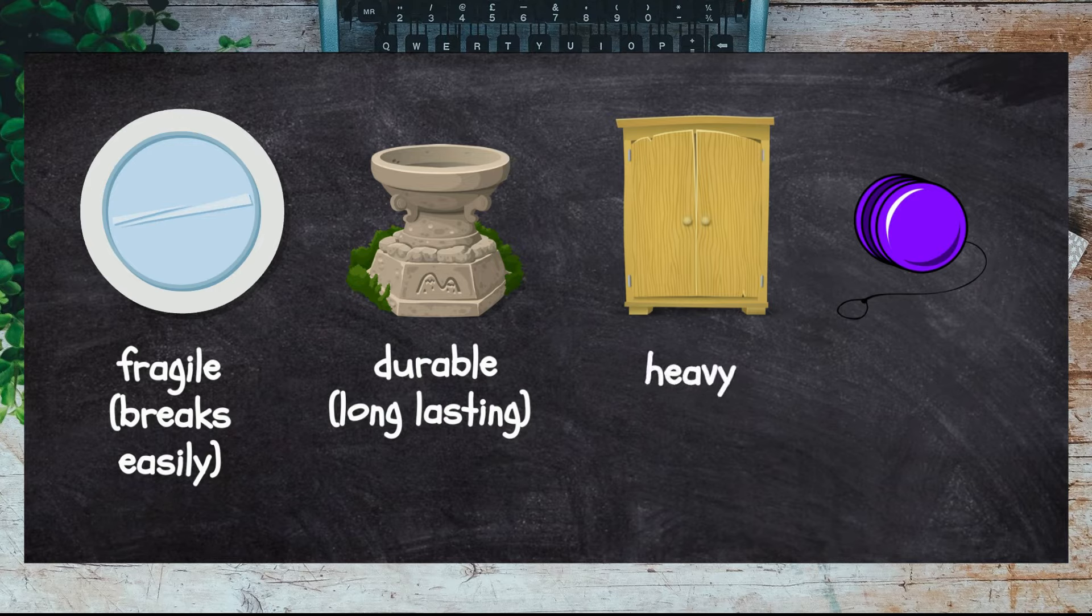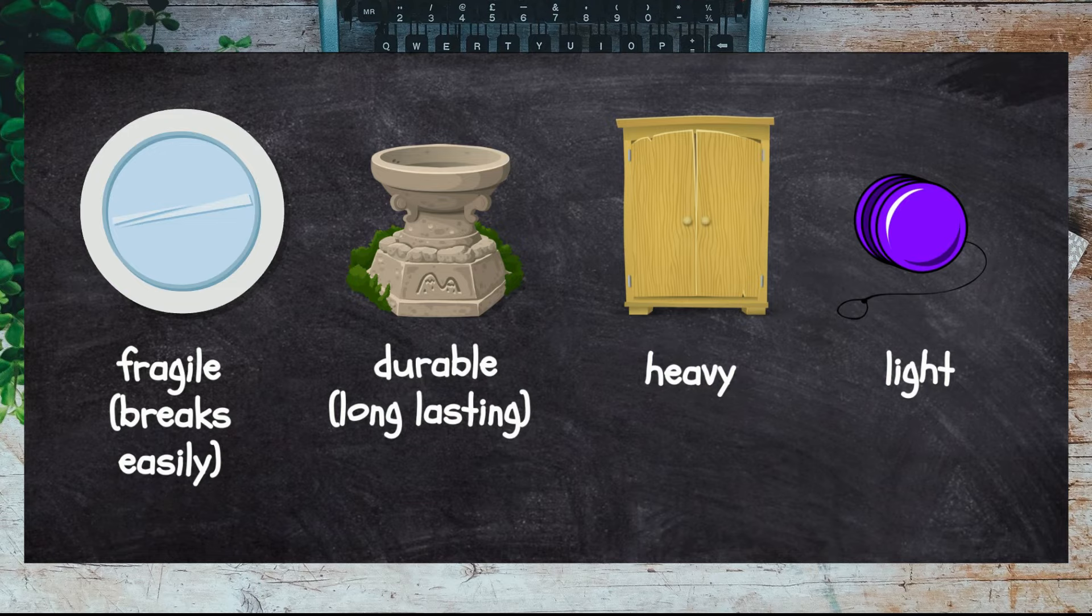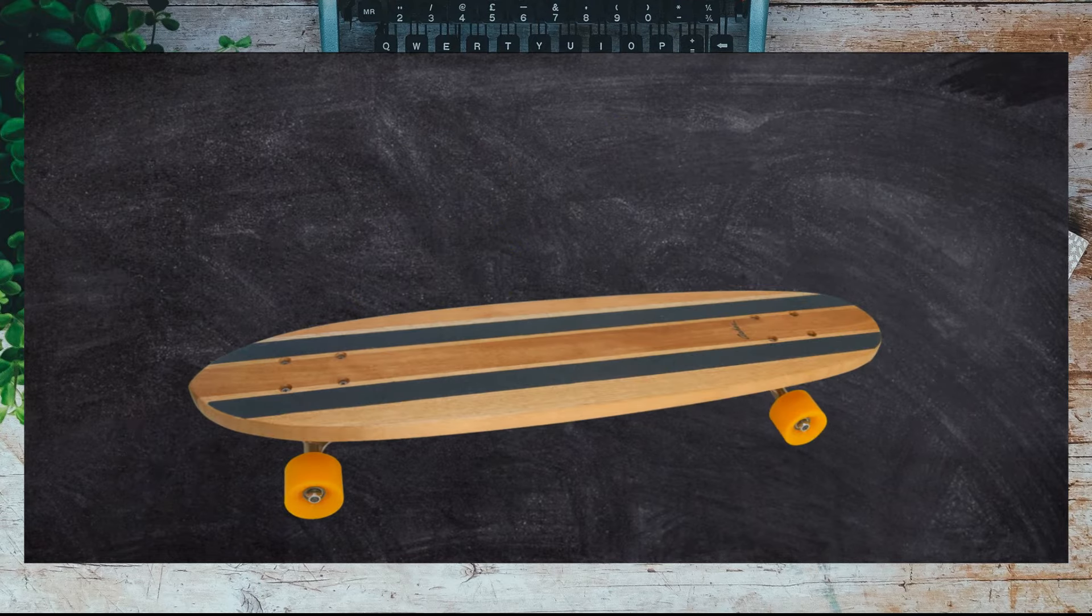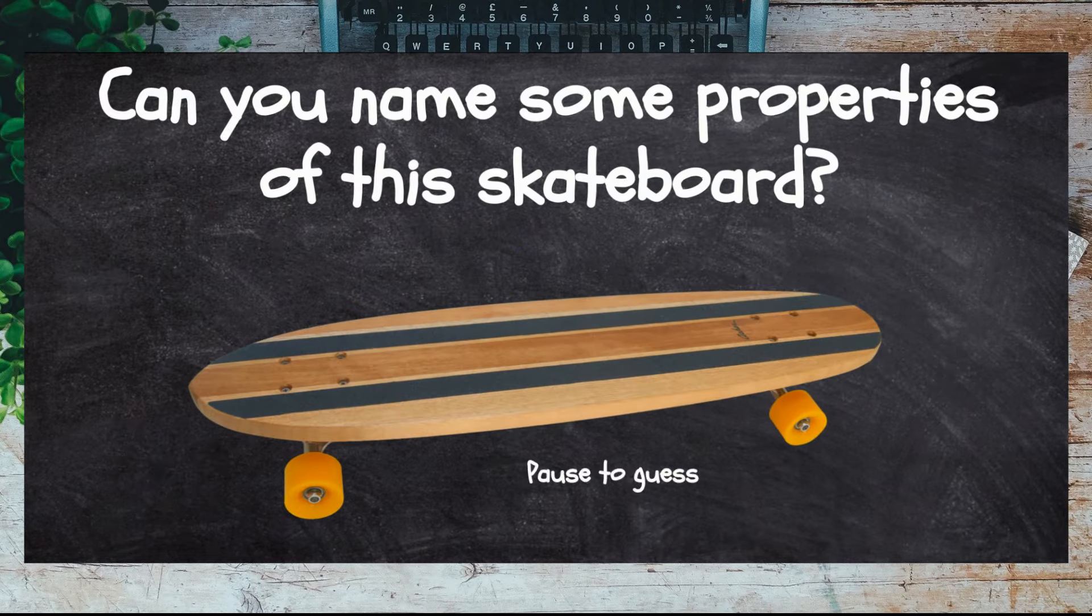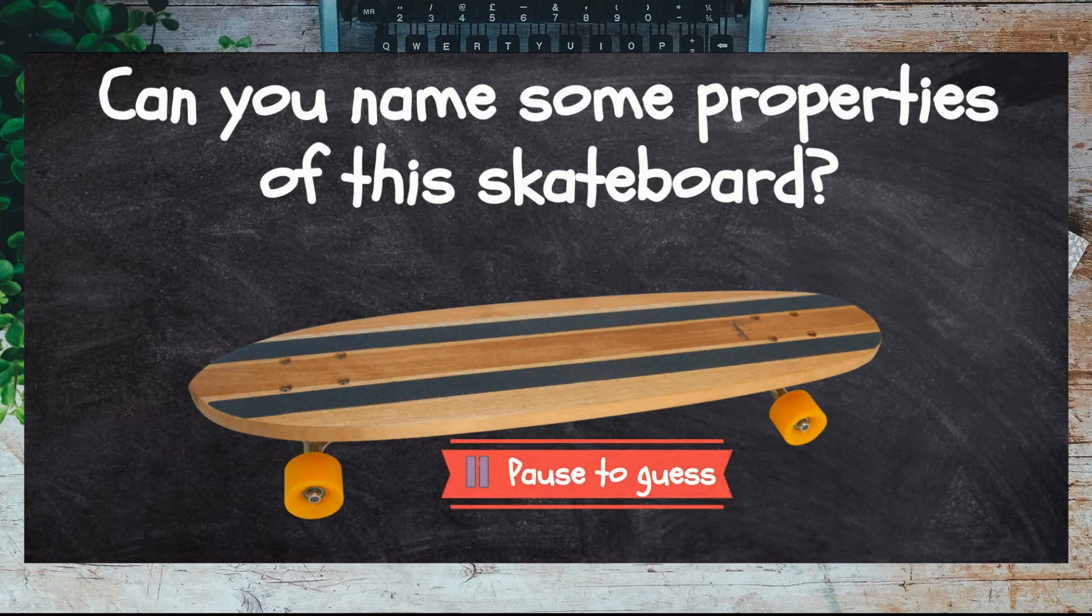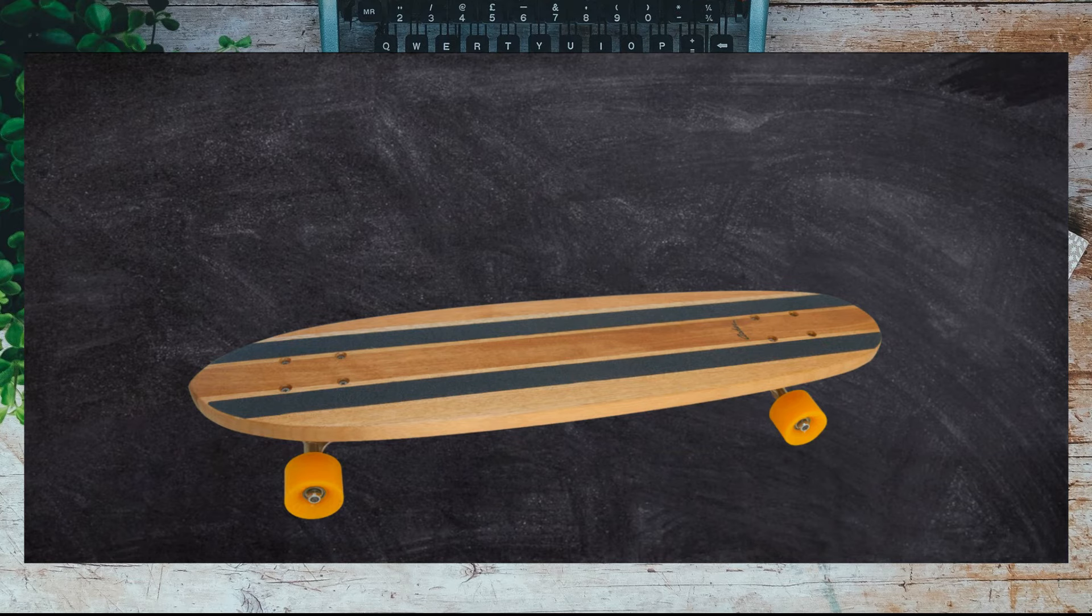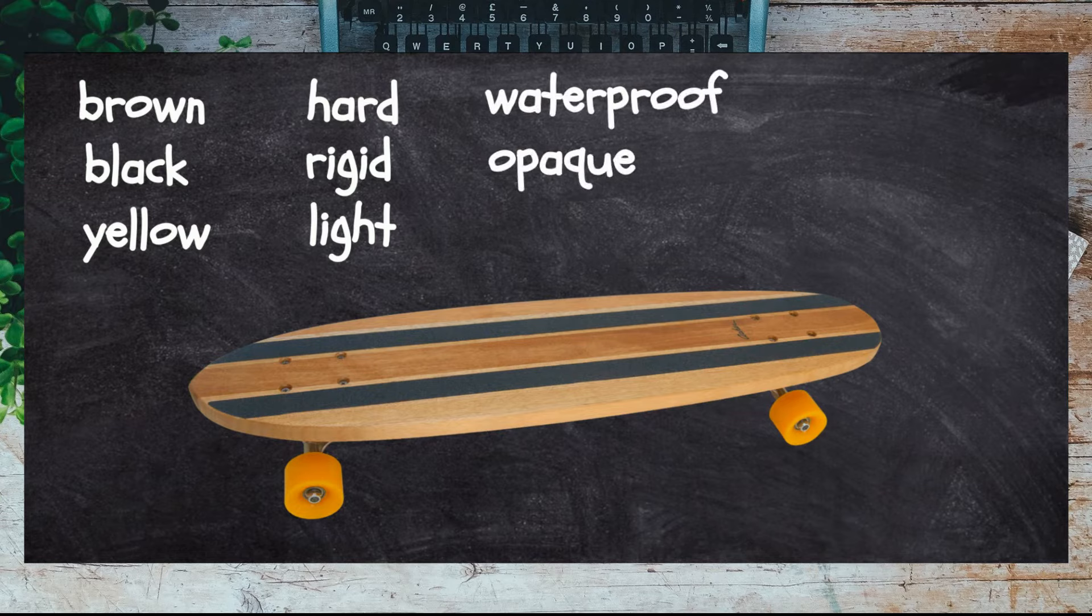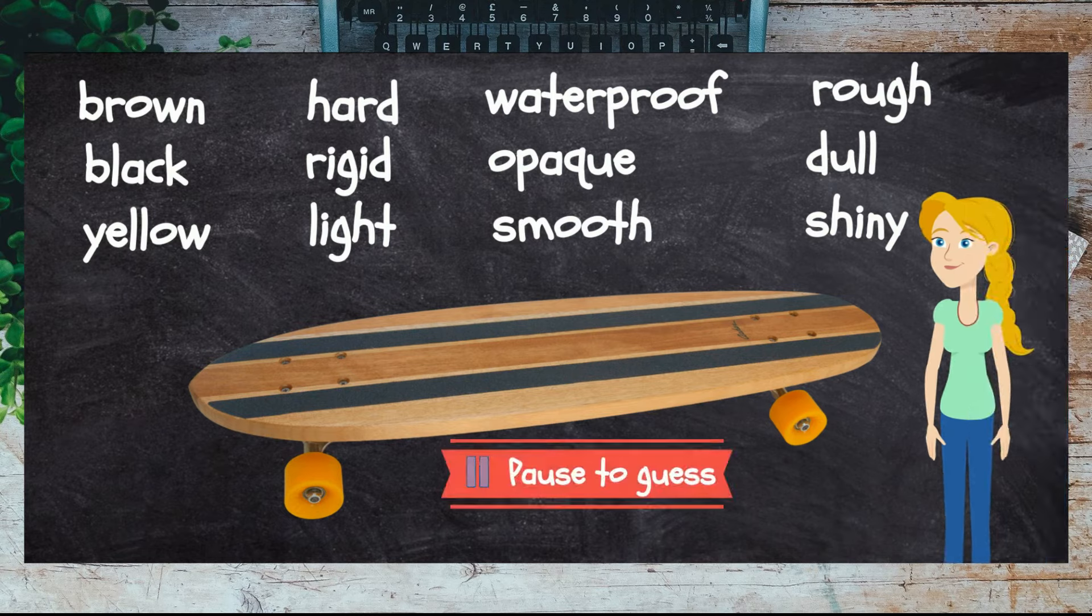Let's test your knowledge. Can you name some properties of this skateboard? These are some of the words you may have come up with: brown, black, yellow, hard, rigid, light, waterproof, opaque, smooth, rough, dull, shiny. Did you think of any other properties?